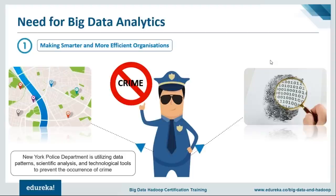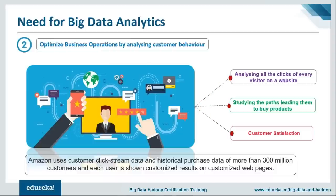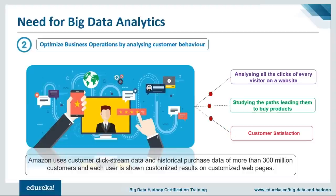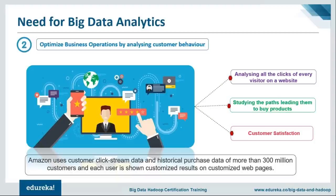The second reason is to optimize business operations by analyzing customer behavior. Amazon uses clickstream data and historical purchase data of over 300 million customers to analyze how each user clicks on different products and navigates their site, showing each user customized results on personalized web pages. By analyzing every visitor's clicks, Amazon better understands site navigation behavior, the paths people take to buying products, and the paths that led customers to leave their page — helping them improve customer experience and expand their customer base.